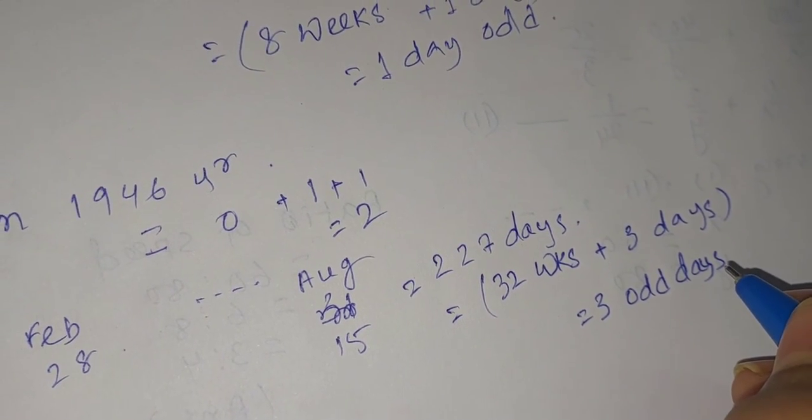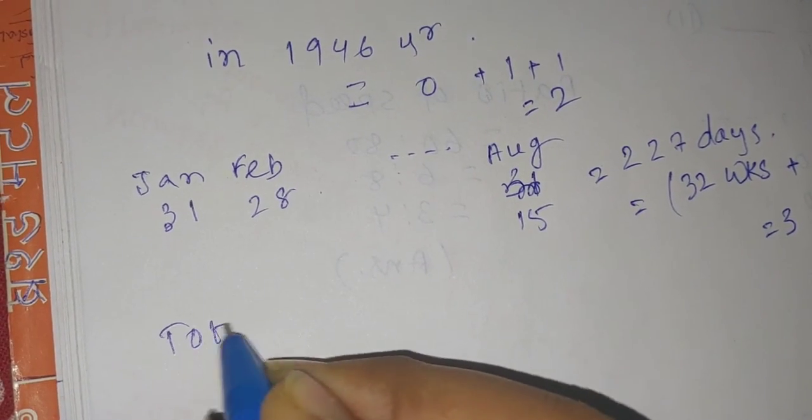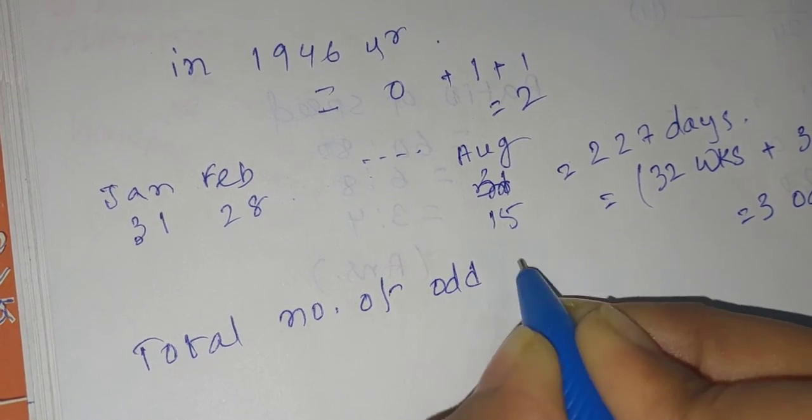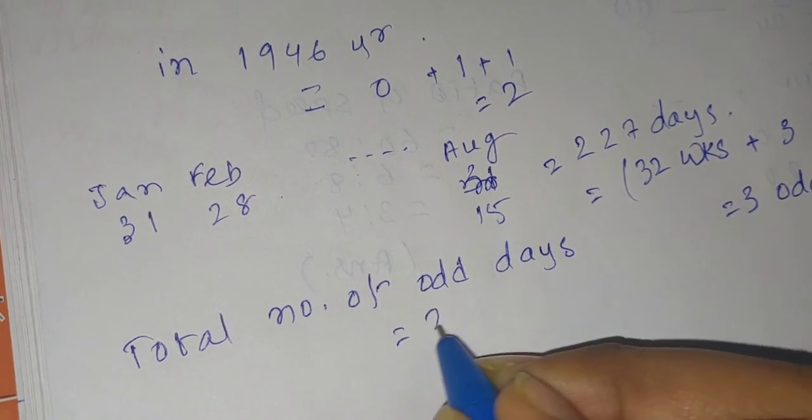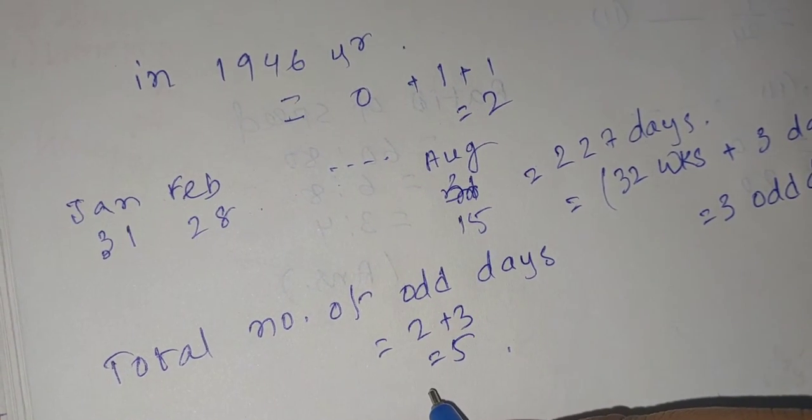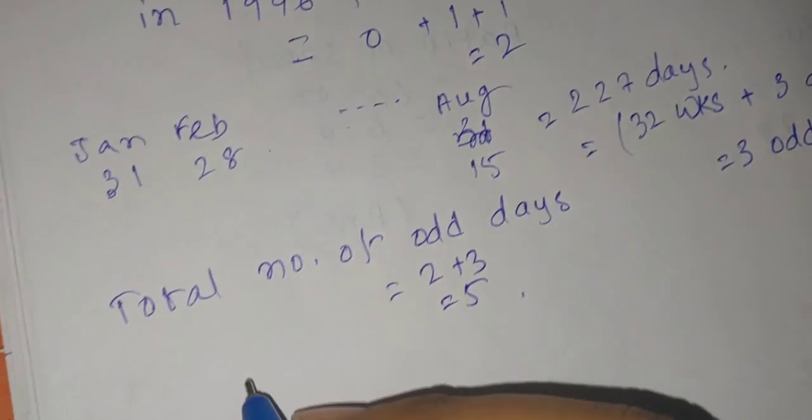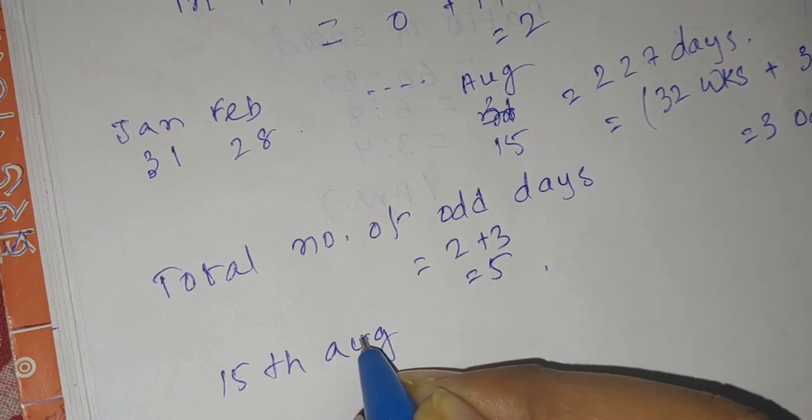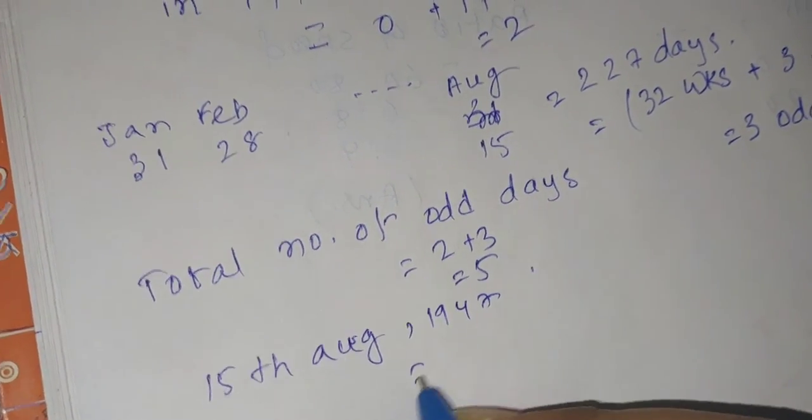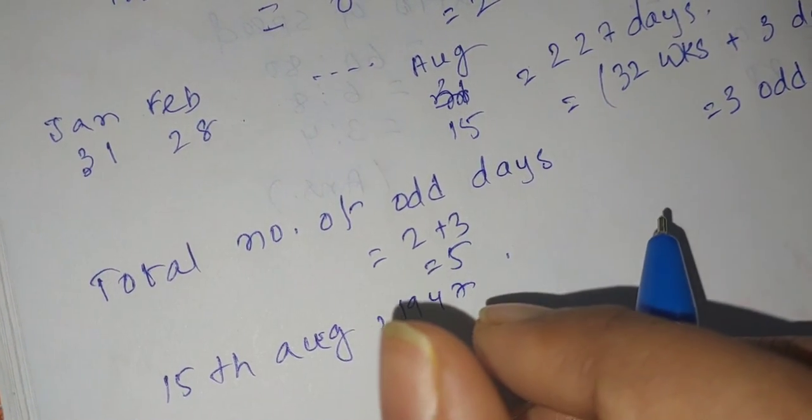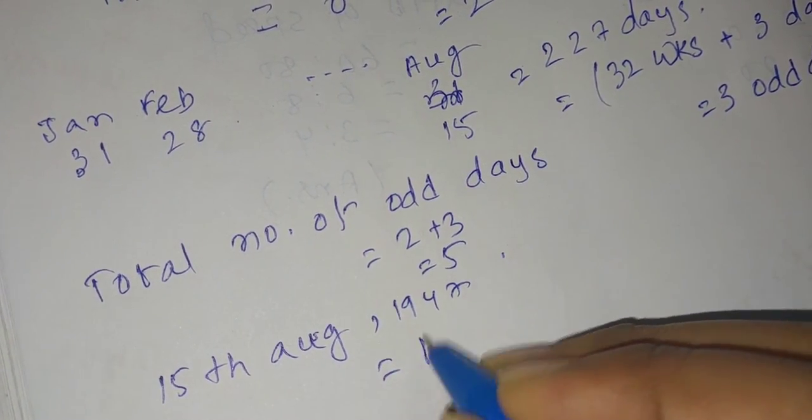32×8 days. Now then the total number of odd days equals to 2 plus 3 equals to 5. Five odd days are there. So if 5 odd days are there, then obviously 15th August 1947 is the fifth odd day: Monday, Tuesday, third, what is the fifth day? Friday. That is Friday.